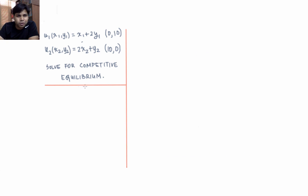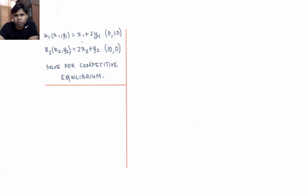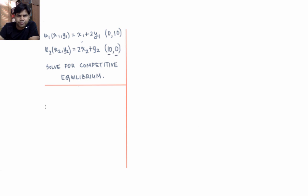In this video we'll learn how to solve for competitive equilibrium in the following economy. Individual 1's utility function is x1 plus 2y1. Individual 2's utility function is 2x2 plus y2. Individual 1's endowment is 0 units of x and 10 units of y, and individual 2's endowment is 10 units of x and 0 units of y.